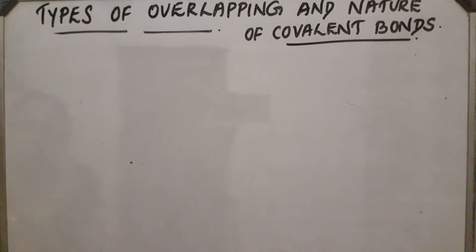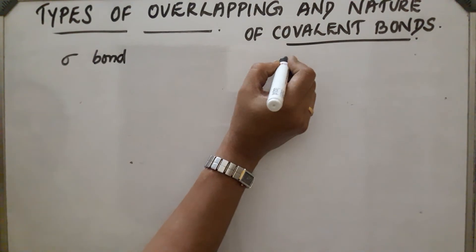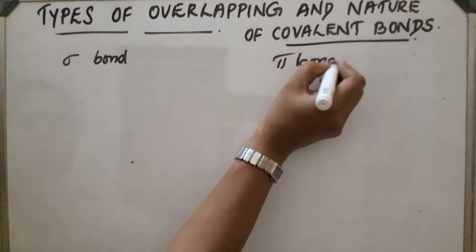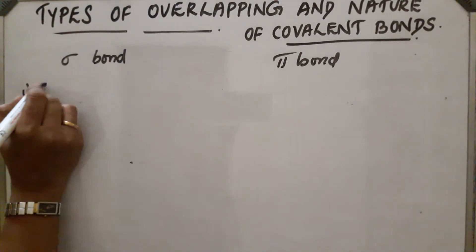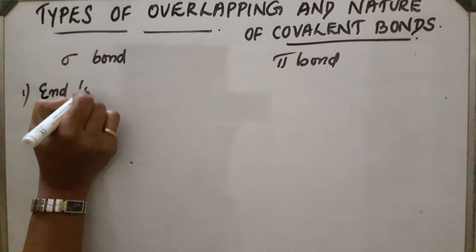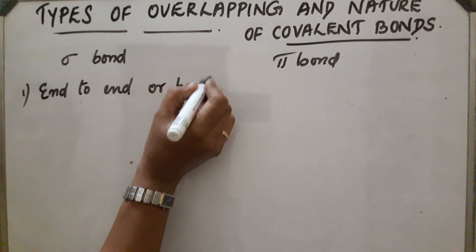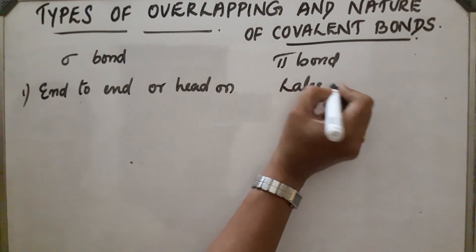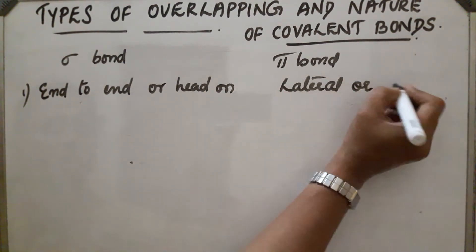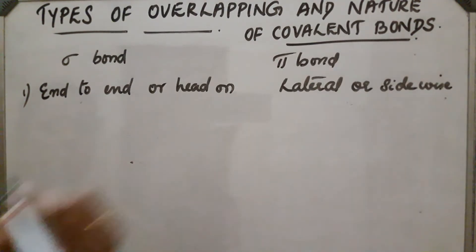Let's distinguish between sigma bond and pi bond. First point: in the case of sigma bond, end-to-end or head-on overlapping takes place, whereas in the case of pi bond, lateral or sidewise overlap takes place.